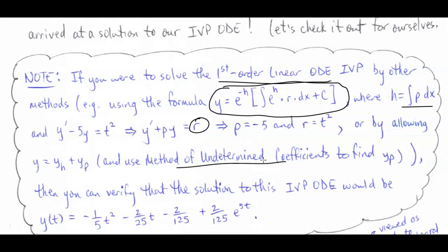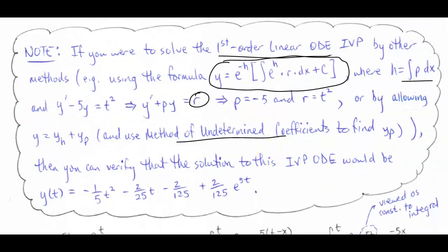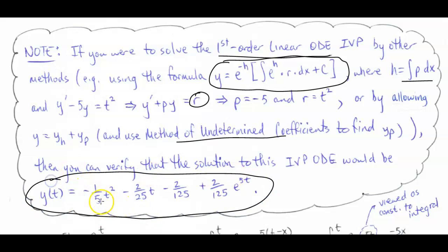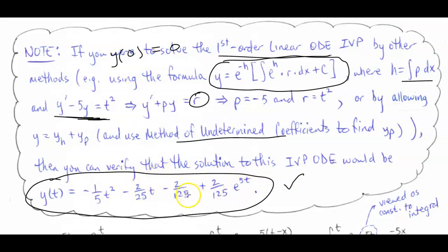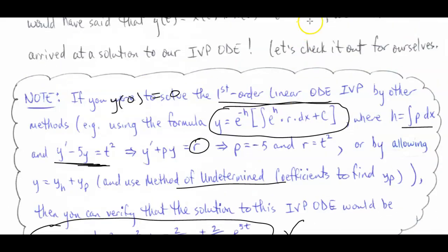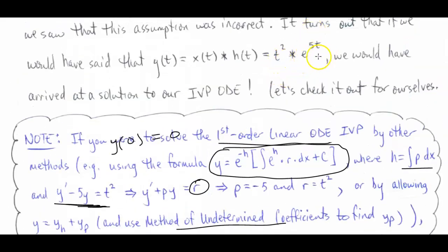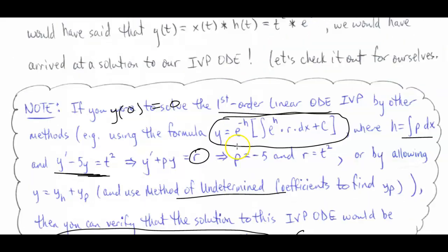We normally don't use method of undetermined coefficients for first order — we reserve it for second order and higher — but we could actually do it that way. Either way, if you solve it using one of these two methods, this is what our solution would be to the ODE with the initial condition y(0) = 0. I'm saying all this to say this is what we're expecting to get if we convolve t squared and e raised to the 5t.